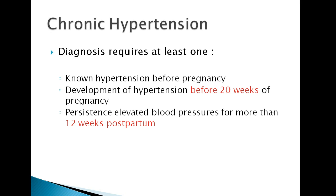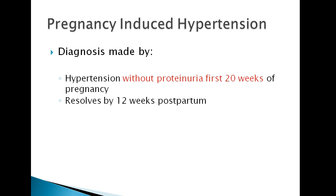Chronic hypertension may develop during pregnancy or before the pregnancy itself — it is not due to the pregnancy itself. It is usually because of the development of the placenta and the blood flow. Pregnancy-induced hypertension is the condition where the patient had hypertension after 20 weeks of pregnancy and usually resolved by 12 weeks postpartum.